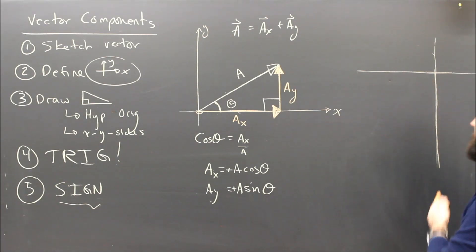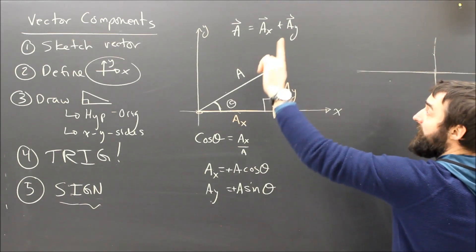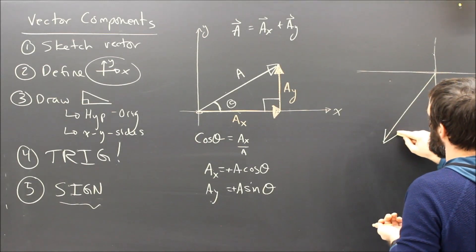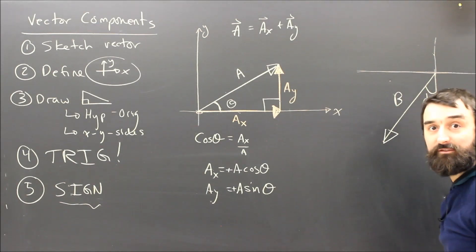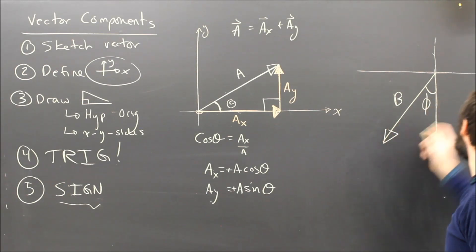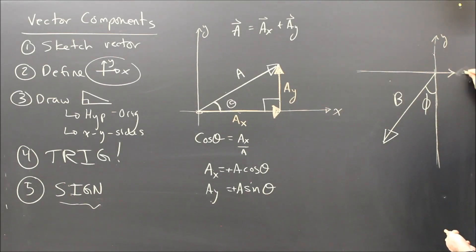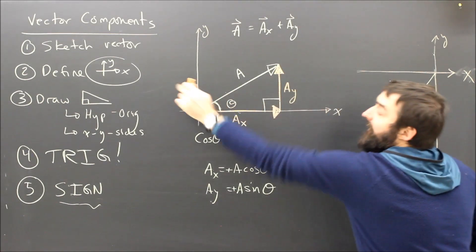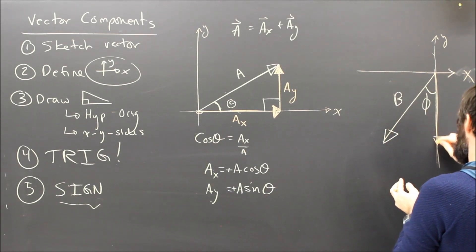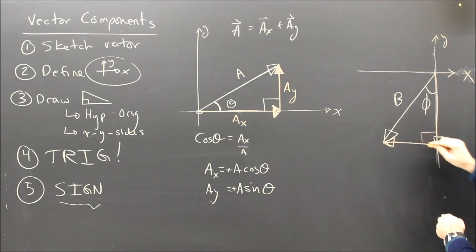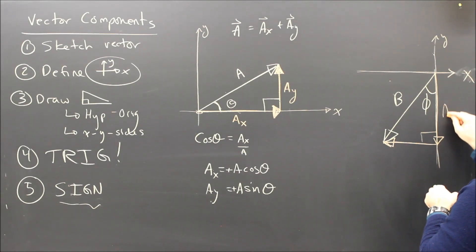To see if we understand it, let's try another example over here. Let's call it part of the same question. So we've already said x is to the right and y is up. But now I've got some other vector, B. And let's say I told you that this angle, I'll call it phi so it's different. I've already said that x is to the right. I can't go change that in the middle of a question. I'm not sure you can see that. I can't go change my coordinate system in the middle of a question. So I've got to stick with it.